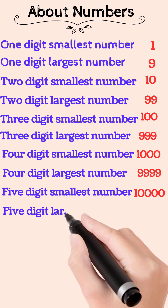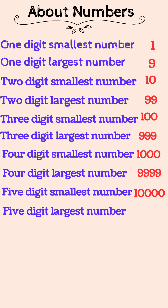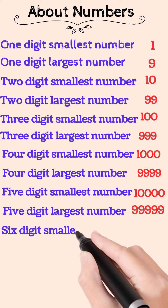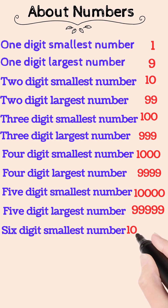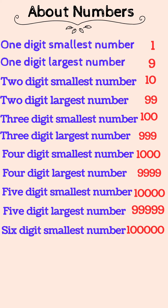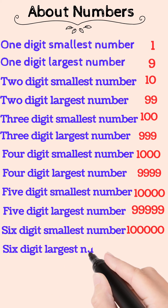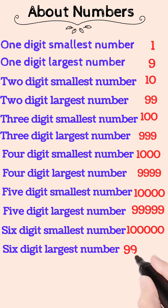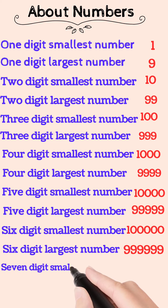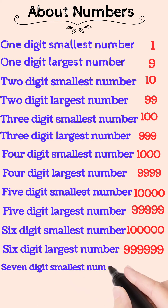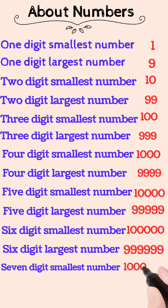Five digit smallest number is 10,000, five digit largest number is 99,999. Six digit smallest number is one lakh, six digit largest number is nine lakhs ninety nine thousand nine hundred ninety nine.